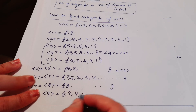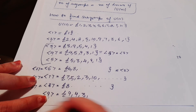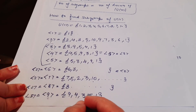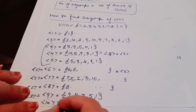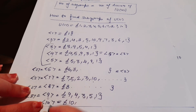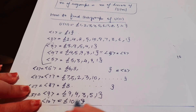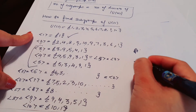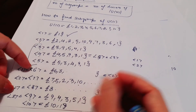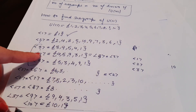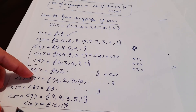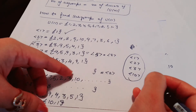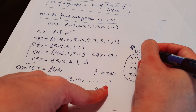For subgroup generated by 9: 9^1 = 9, 9^2 = 81 → remainder 4 (since 81 = 7×11 + 4), 9^3 = 4×9 = 36 → remainder 3, 9^4 = 3×9 = 27 → remainder 5, 9^5 = 5×9 = 45 → remainder 1. So ⟨9⟩ = {1, 3, 4, 5, 9} = ⟨3⟩. For subgroup generated by 10: 10^1 = 10, 10^2 = 100 → remainder 1. So ⟨10⟩ = {1, 10}, a unique subgroup of order 2.